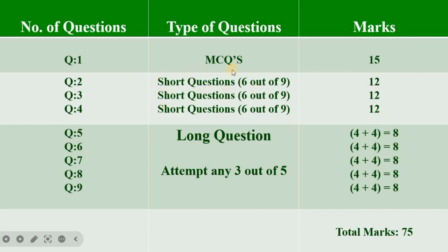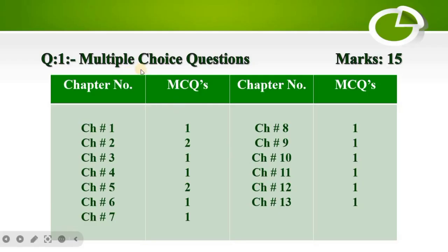For long questions, you will have three questions to attempt, and you have a choice of two. The questions have A and B parts, each worth 4 marks. You will have to attempt the first four long questions, and the last question number 9 is compulsory. You must do three long questions in total.